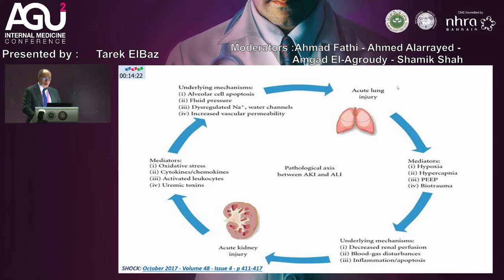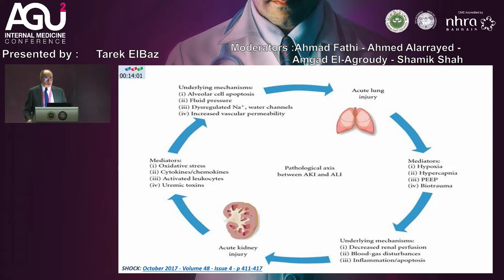If the condition initially started by an acute lung injury — such as in adult respiratory distress syndrome — the patient may suffer from hypoxia, hypercapnia, and increased intra-abdominal pressure related to positive end-expiratory pressure during mechanical ventilation. Eventually, these patients will also suffer from AKI. So it goes round and round, whether originating from one side or the other.